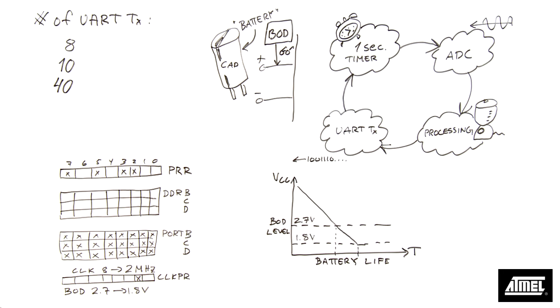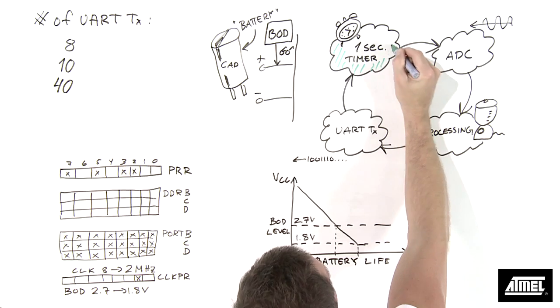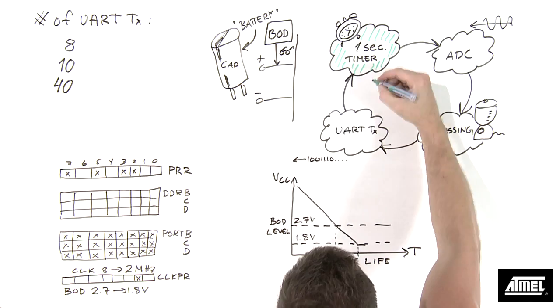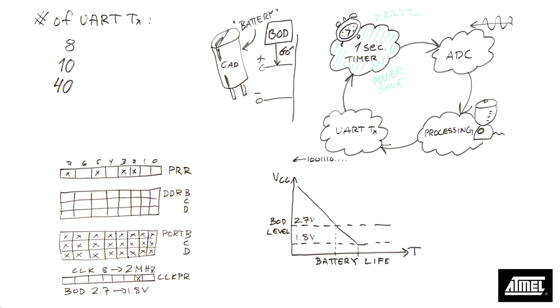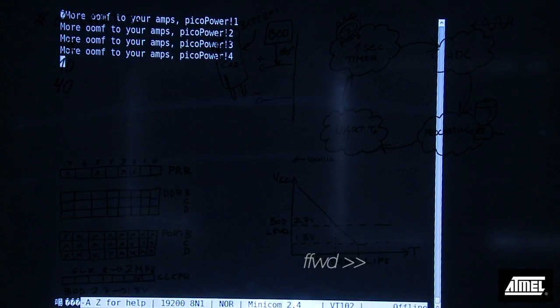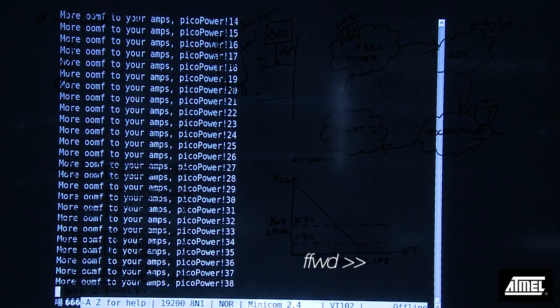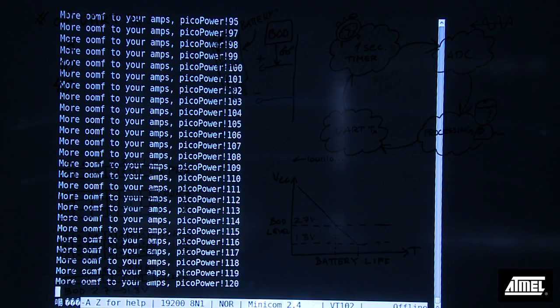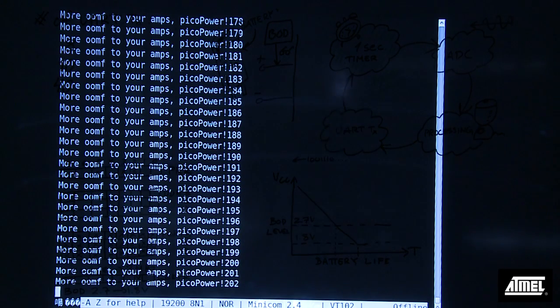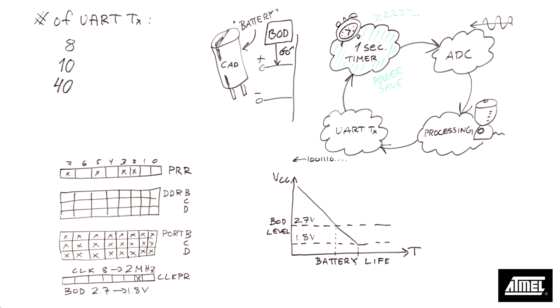An obvious next step is to put the AVR device in power save mode in between UART transmission and the next ADC conversion. 202 transmissions before losing power. An instant 5 times battery lifetime increase from the previous attempt. And we can really see the benefits of PicoPower.